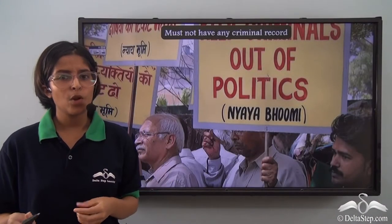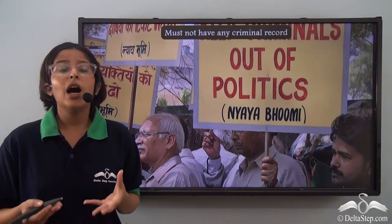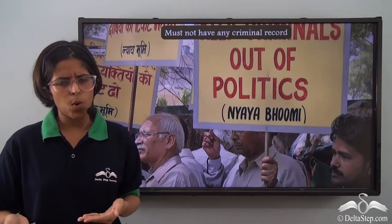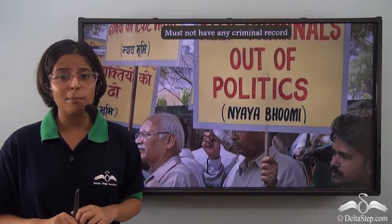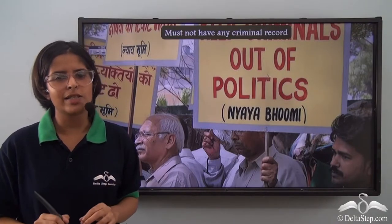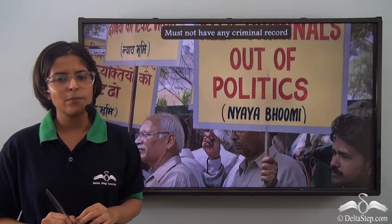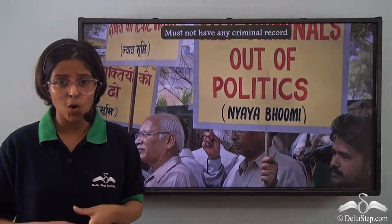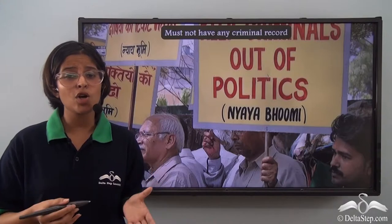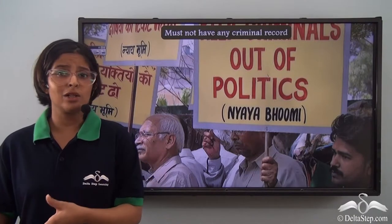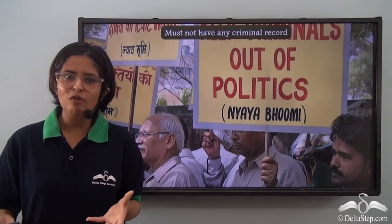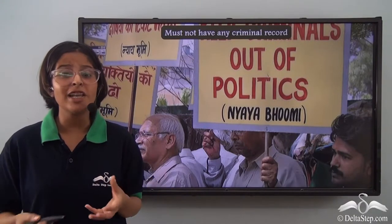A criminal is someone who breaks the law. The main function of the legislature is to make laws, so what will happen if the people who break the laws make the laws? The system will obviously become very corrupt.